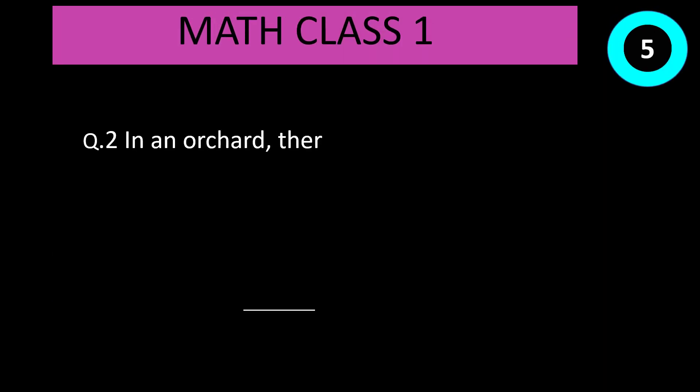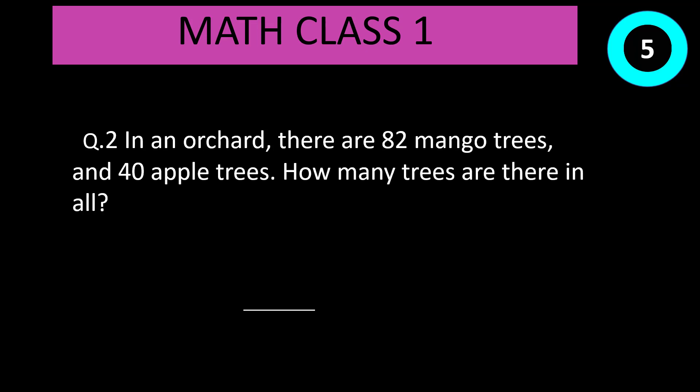Question number 2: In an orchard, there are 82 mango trees and 40 apple trees. How many trees are there in all? Time start now. Correct answer is 82 plus 40 equal to 122.